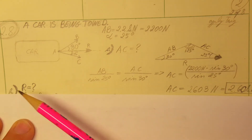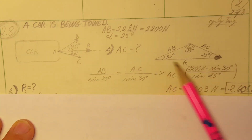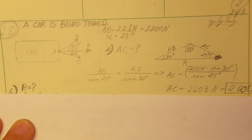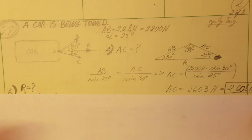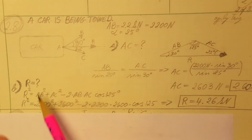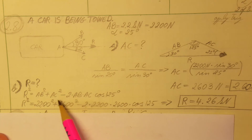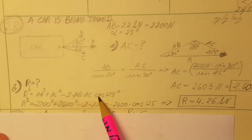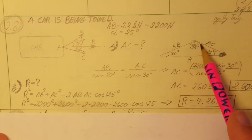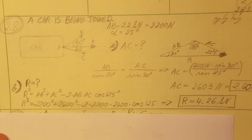For the second part, they are asking us to find R, which is the resultant — the hypotenuse in our triangle. We could use the law of sines again, but I'll use the law of cosines. Writing it out: R squared equals AB squared plus AC squared minus 2 times AB times AC times cosine of 125 degrees, which is the angle opposite to R. Plugging in and solving with a calculator, we get the resultant equal to 4.26 kilonewtons.